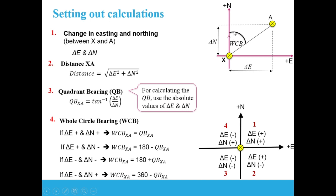To set out any point we need two numbers to be calculated. The first is the whole circle bearing — an angle from north towards the line XA. The second is the distance between station X and point A, which is the point to be set out.